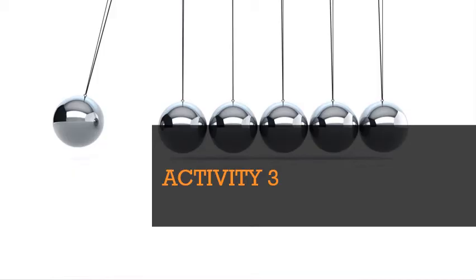Let's continue with activity 3 from page 108. This is an activity that you will have to do in the dark. In the evening, go out in the open ground with few friends. Take a torch and a large sheet of cardboard with you. Hold the torch close to the ground and shine it upward so that its light falls on your friend's face.